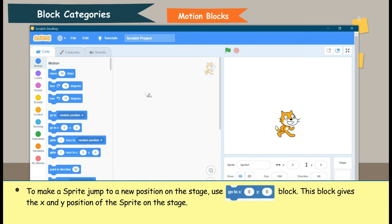To make a sprite jump to a new position on the stage, use Go To X 0 Y 0 block. This block gives the X and Y position of the sprite on the stage.